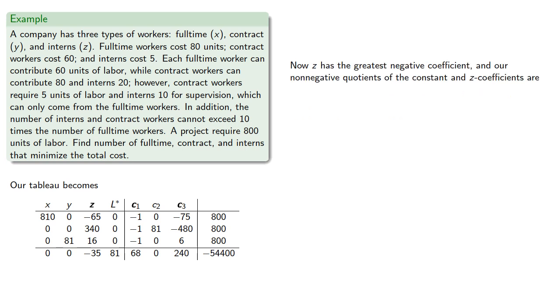Now z has the greatest negative coefficient, and our non-negative quotients of the constant and z coefficients are... So we'll pivot on z in the second row, making z basic and c2 free. Our tableau becomes...